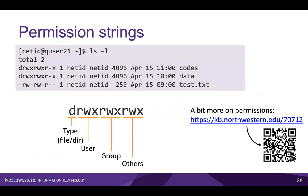On Quest, you can see the permissions to a file or a directory by running ls -l in the directory. The first column of this output shows what are called permission strings. The first character of the permission string indicates whether the item is a file, indicated by a hyphen, or a directory, indicated by the character d. The following three characters indicate the read, write, and execute permissions for the file owner. The next three characters indicate permissions for the group, and the next three are for all Quest users. For more information on Quest permissions, please see our KB page on the slide.